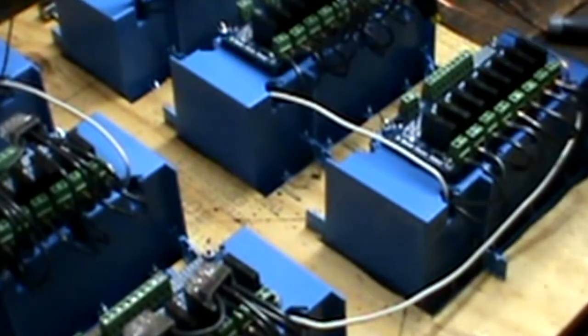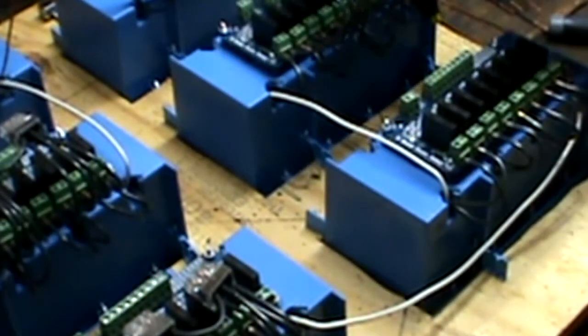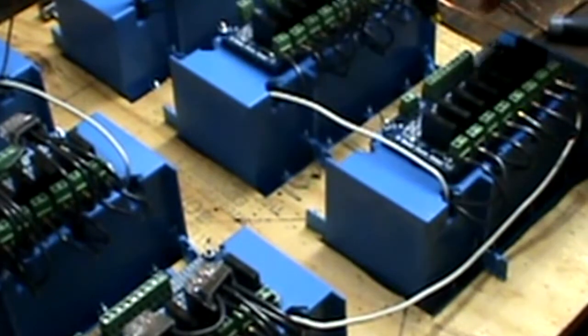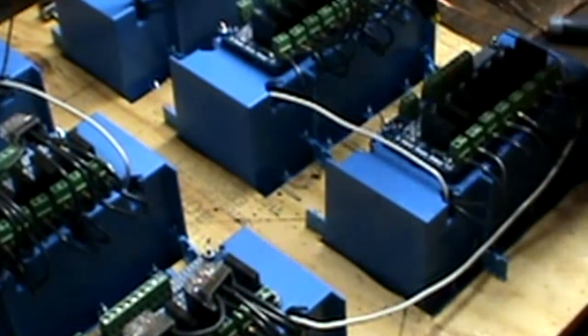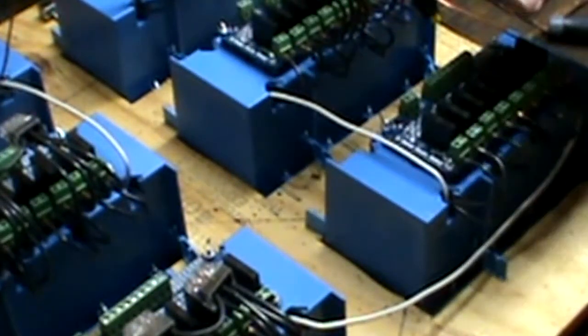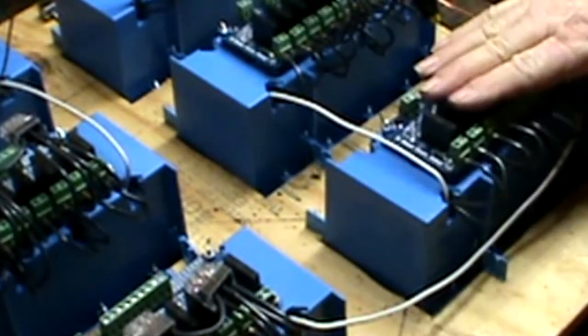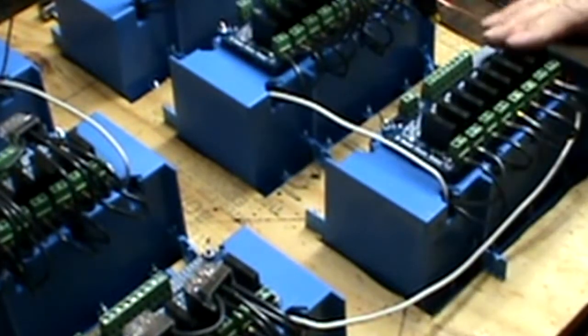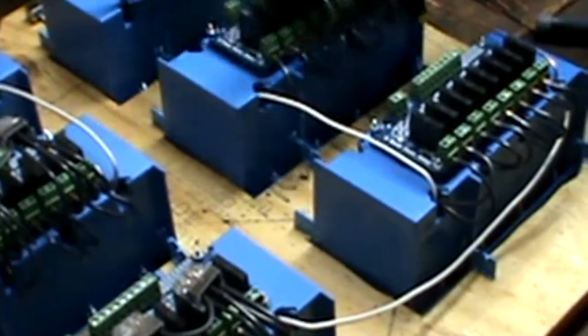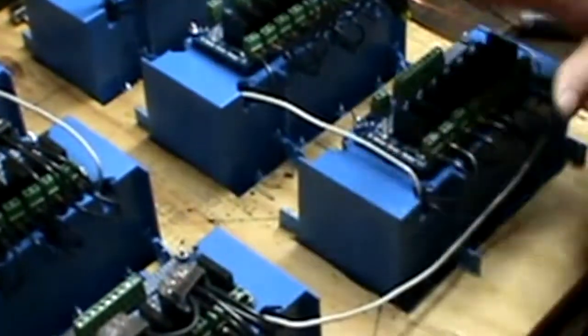All right, now we're going to be connecting our 110 voltage. Each one of the relays has to have a 110 going to it and that'll be on all the time. So we're going to put the wires on this set of relays right here. The other five I've already put together and I'll show you how I did that.